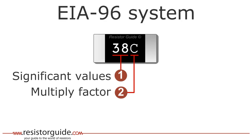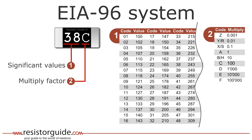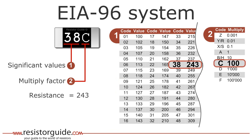The third character also represents a code to retrieve the multiply factor. Let's solve this particular example. By looking up 38 in table 1 we find a value of 243. In table 2 we find that the letter C means a multiply factor of 100. This resistor has therefore a value of 24.3 kilo ohms.